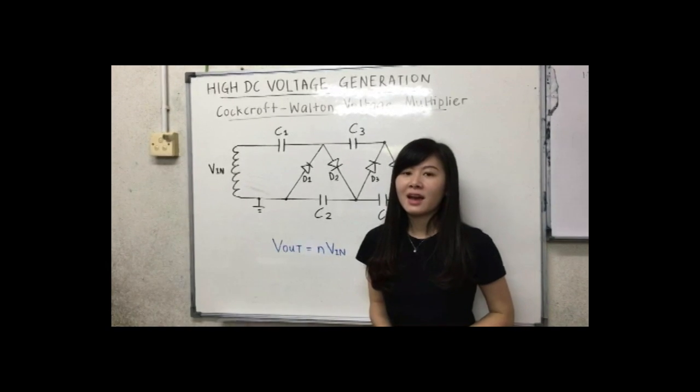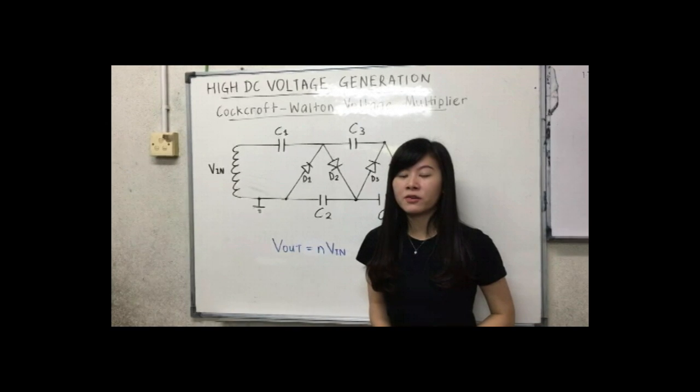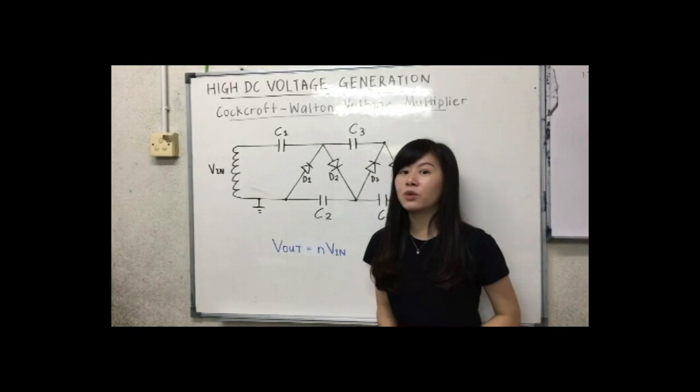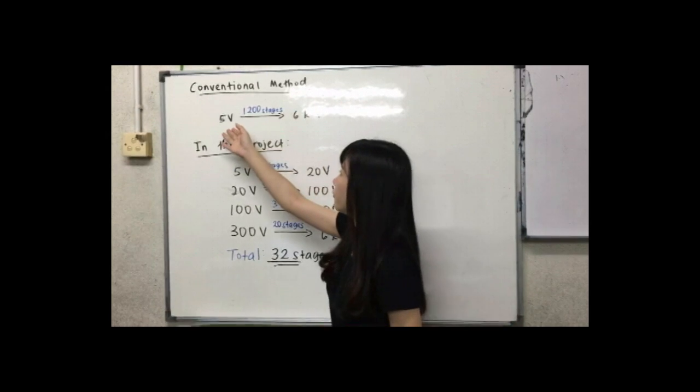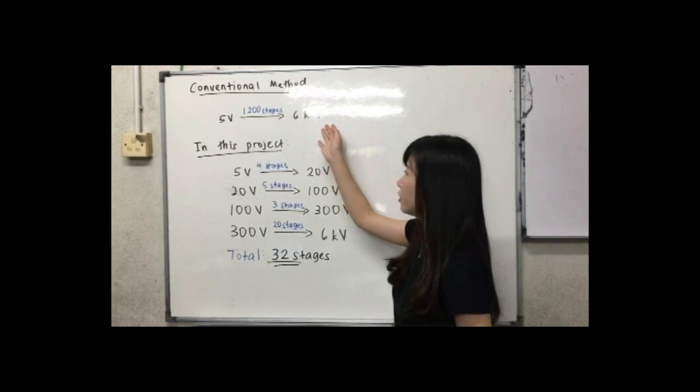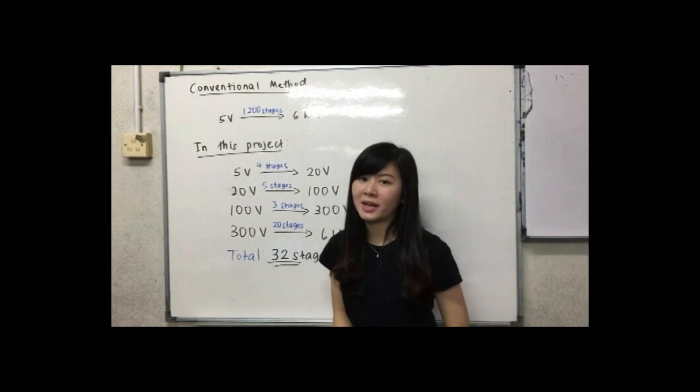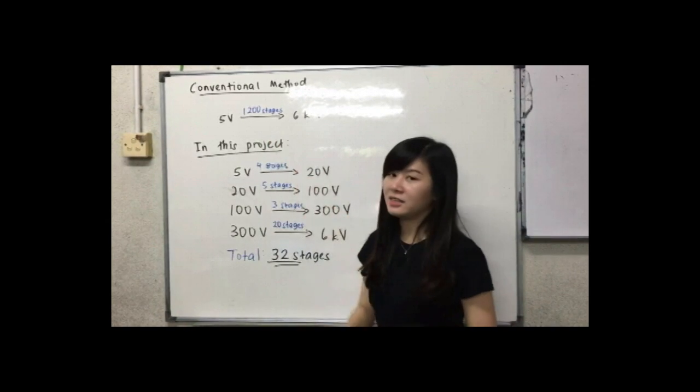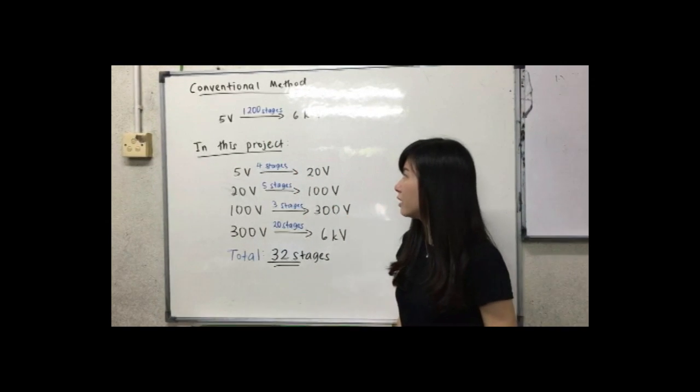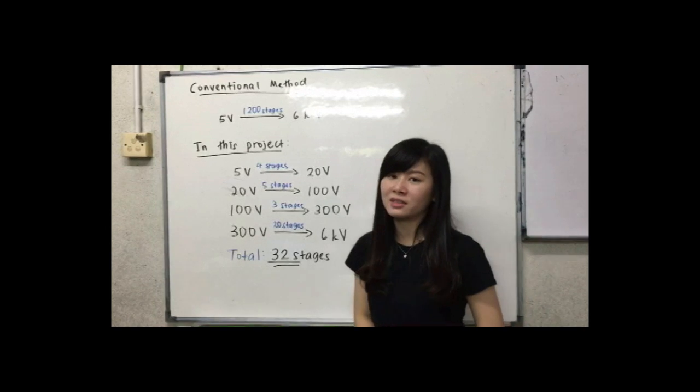But the question is, how can I obtain 6kV by using the Cockroft-Walton voltage multiplier? By using the conventional method, with the input of 5V to obtain 6kV, the number of diode and capacitor combination will be 1200 stages. In this project, I will reduce the number of stages from 1200 stages to only 32 stages.